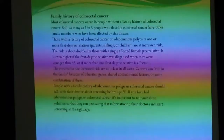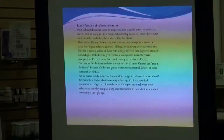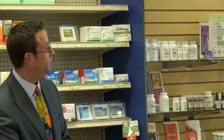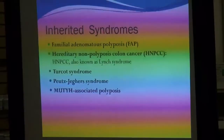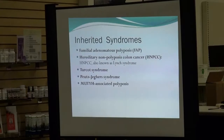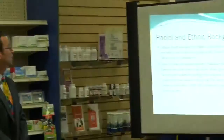Family history of colon cancer: depending on the age, if you have a first-degree family member — mother, father, sister, brother — who had colon cancer before age 50, that increases your risk significantly. There are also genetic diseases that predispose you to colon cancer. These are the inherited syndromes: Familial Adenomatous Polyposis syndrome, non-polyposis colon cancer known as Lynch syndrome, Turcot syndrome, Peutz-Jeghers, and another polyposis syndrome. These are all genetic conditions that you can be genetically tested for.